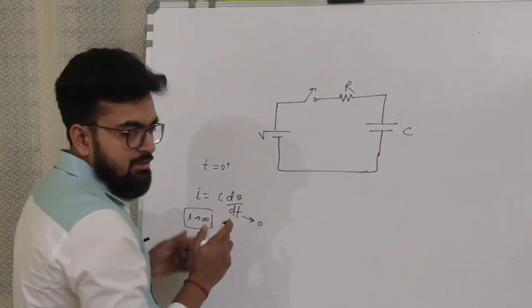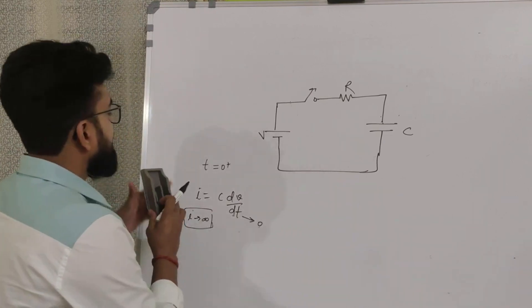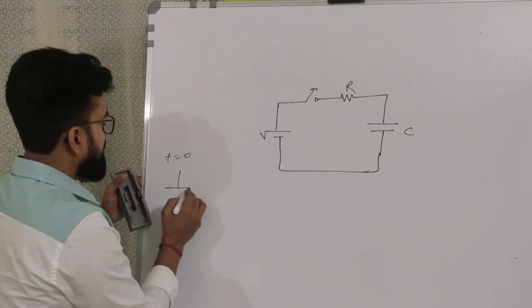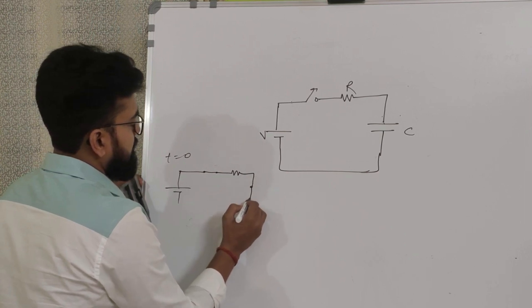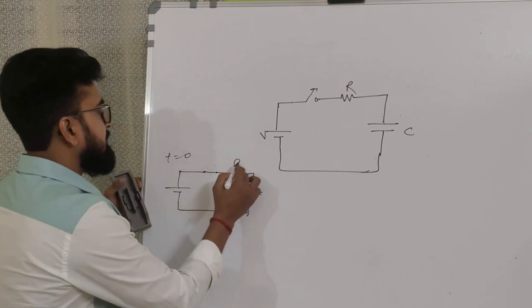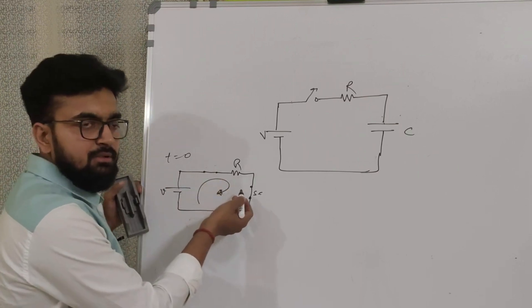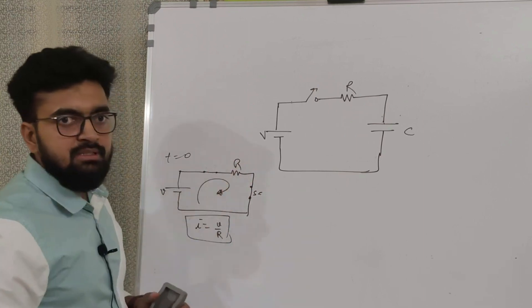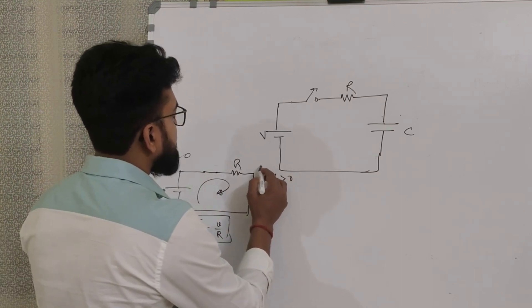That is why the capacitor does not allow a sudden change in voltage. Right after closing the switch, the capacitor is a short circuit. Applying KVL, the current passing through the circuit is simply I equals V over R — just a battery connected with resistor R.